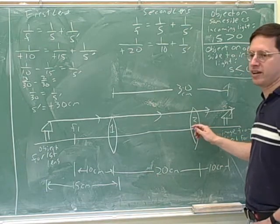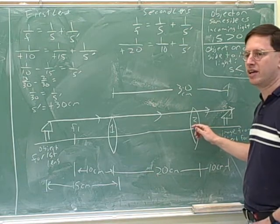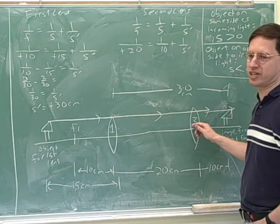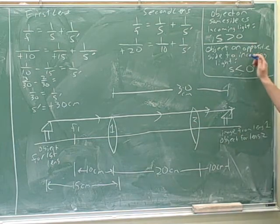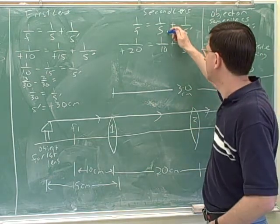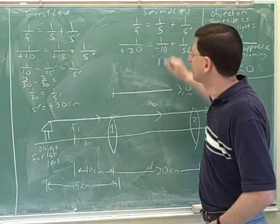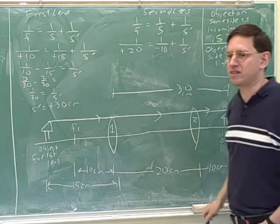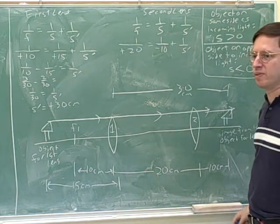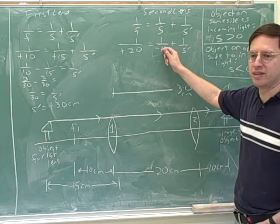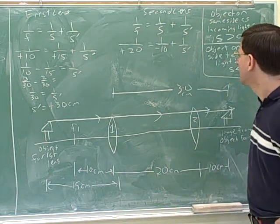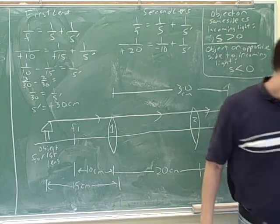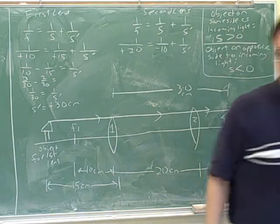For lens two, which side is the incoming light on? The left. And which side is the object on? The right. So it's definitely on the opposite side to the incoming light. So what's the object distance? Negative 10. And that's one of the main things they're testing in this problem — whether people can put in the correct sign. Now we should be in good shape to continue.